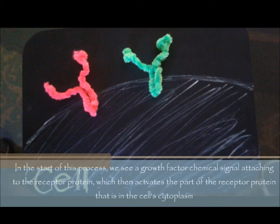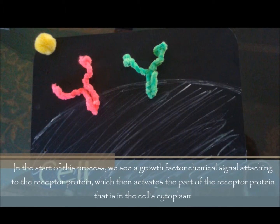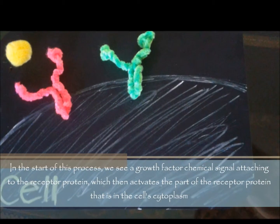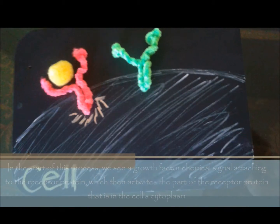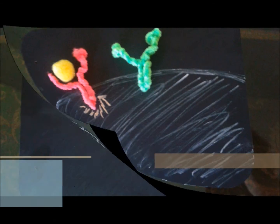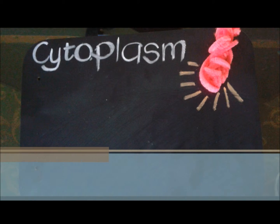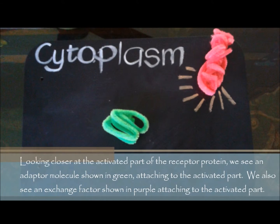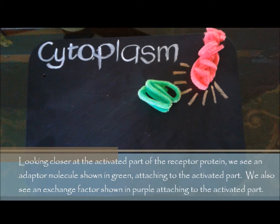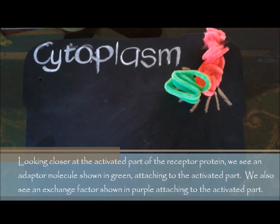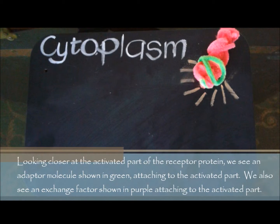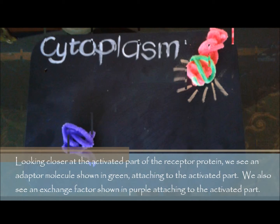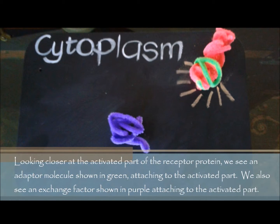In the start of this process, we see a growth factor chemical signal attaching to the receptor protein, which then activates the part of the receptor protein that is on the cell's inner side. Looking closer at the activated part of the receptor protein, we see an adapter molecule shown in green attaching to the activated part. We also see an exchange factor shown in purple attaching to the activated part.